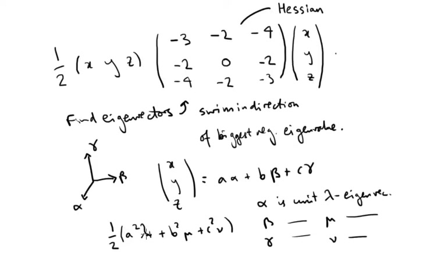So suppose lambda is the biggest of these three, the biggest negative of these three, then clearly moving in this direction, this alpha direction, will decrease this function faster than moving in any of the other directions.